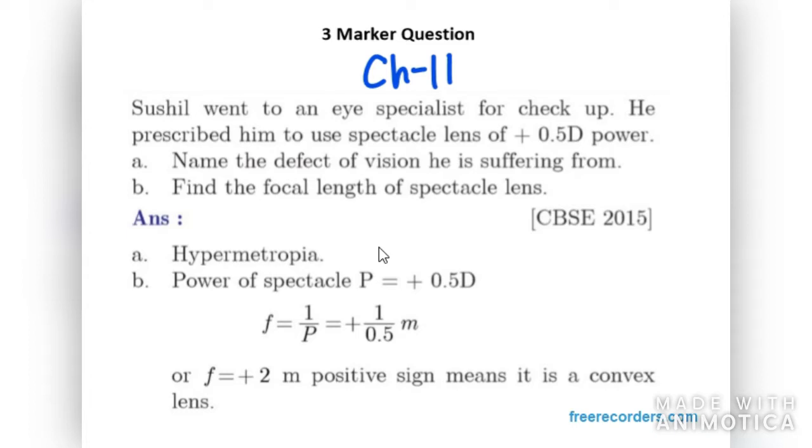Let's start with question one. Sushil went to an eye specialist for checkup. He prescribed him to use spectacle lens of +0.5D power. Name the defect of vision he is suffering from. It is hypermetropia. As you can see, the power is positive, so it is hypermetropia.